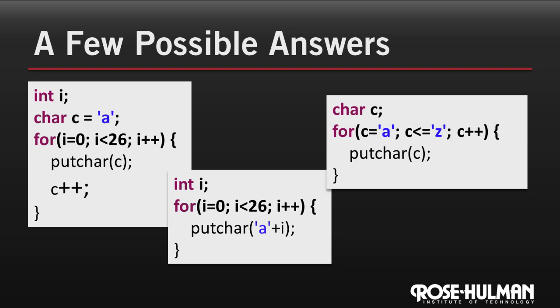This last solution is my favorite. It takes advantage of the fact that chars are just numbers, which lets us use a char variable as the loop index. We start the loop with C set to A and run until C is no longer less than or equal to Z. Each time through the loop, we print C and increment it. This version's concise and doesn't use any extra variables beyond what we need to make the solution clear. And the only magic numbers, A and Z, come straight from the problem description.